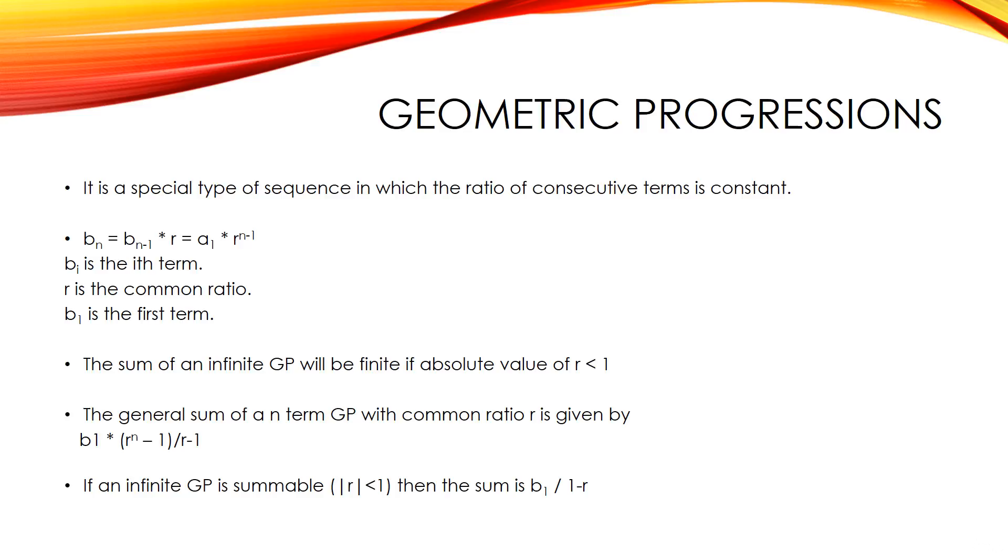The sum of an infinite GP will be finite if absolute value of r is less than 1. The general sum of an n term GP with common ratio r is given by b1 into r to the power of n minus 1 by r minus 1. If an infinite GP is summable, mod r less than 1, then the sum is b1 by 1 minus r.